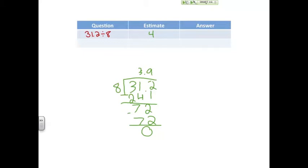It stays there because we have to line up the decimal point together. That leaves us with our answer of 3.9.